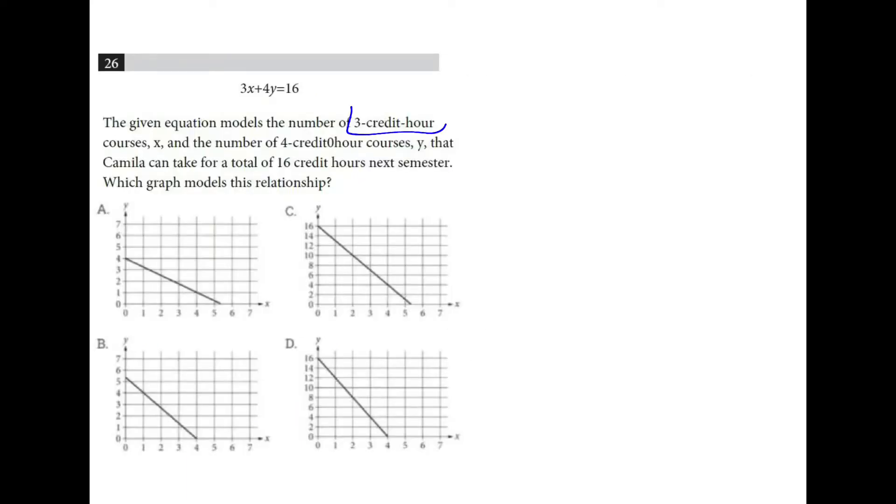So X is the 3 credit hours and Y is the 4 credit hours. If we're looking for a total of 16, when X is equal to 0, Y could be 4. And when Y is equal to 0, X is going to be 5 and 1 third or so. So this one matches those intercepts. That's why A is the right answer.